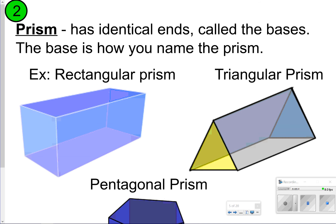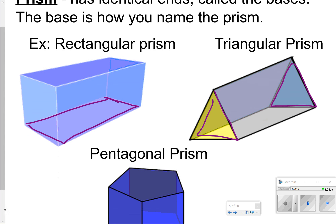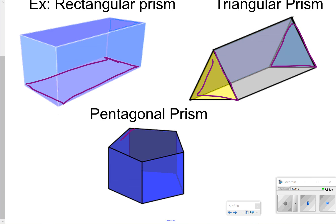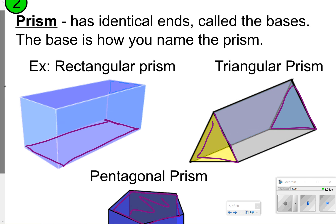The next thing we're going to talk about is a prism. A prism has identical ends called the bases, and the base is how you name the prism. So for instance, a rectangular prism has a rectangular base, a triangular prism has triangles as the base, and a pentagonal prism has a pentagon as its base. Bases are across from one another, so just make sure you see that.